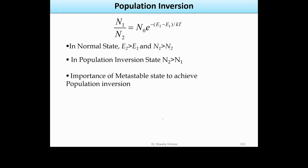The population inversion requires a meta-stable state, because if atoms stop at that state, the number of atoms in the higher energy state will increase. If the excited state is a normal excited state, then after 10 to the power minus 8 seconds, the atom will return to the lower energy level.